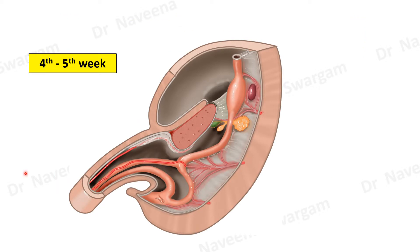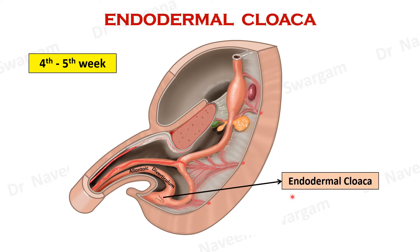By the end of the 4th week of development, the caudal end of primitive gut tube known as hindgut shows a ventral diverticulum which projects into the umbilical cord, known as allantoic diverticulum. The part of hindgut distal to the allantoic diverticulum starts dilating, known as endodermal cloaca, from which the urinary bladder develops.